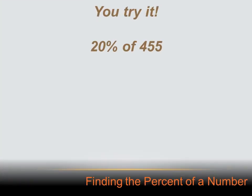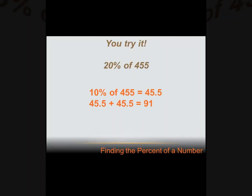Try 20% of 455. Hit your pause button, do the math, then hit your forward key. 20% of 455 — that's not that hard. 20% is 10% plus 10%. 10% of 455 is 45.5. 45.5 plus 45.5 is 91. So 20% of 455 equals 91.